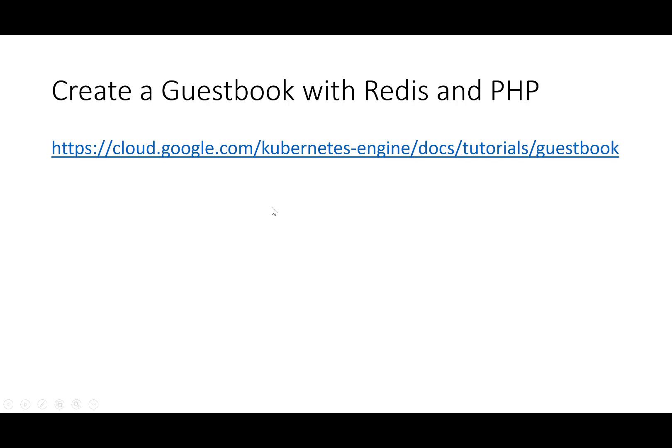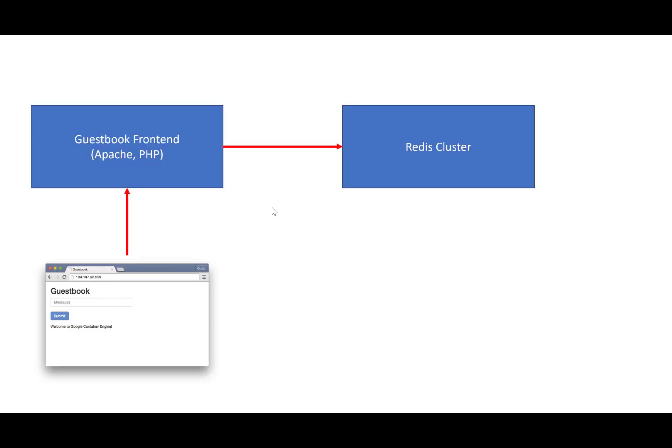So this is the link for the tutorial, and you can find it on Google's website. What does this tutorial do? We build a simple multi-tier web application using the Google Kubernetes Engine. You have the guestbook frontend written in PHP, which probably runs on an Apache server, and this frontend is exposed as an external IP address with a load balancer. The backend is a Redis cluster with a single master and multiple slave workers. This tutorial highlights a number of Kubernetes Engine concepts.